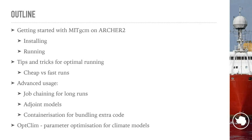Then we'll go on to some advanced usage. Caitlin is going to talk about how to chain jobs together if you have a long run that will outrun the queue. I'm going to talk a little bit about adjoint models. Dan Goldberg is going to talk about containerization for putting non-standard code into a container. And finally, Mike Miniter will give a plug for a follow-on project about parameter optimization in climate models.